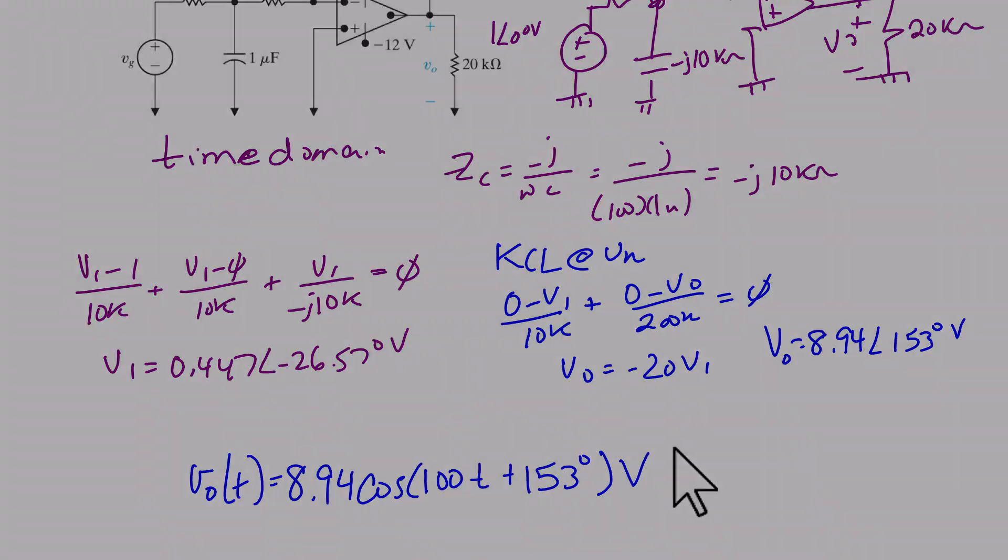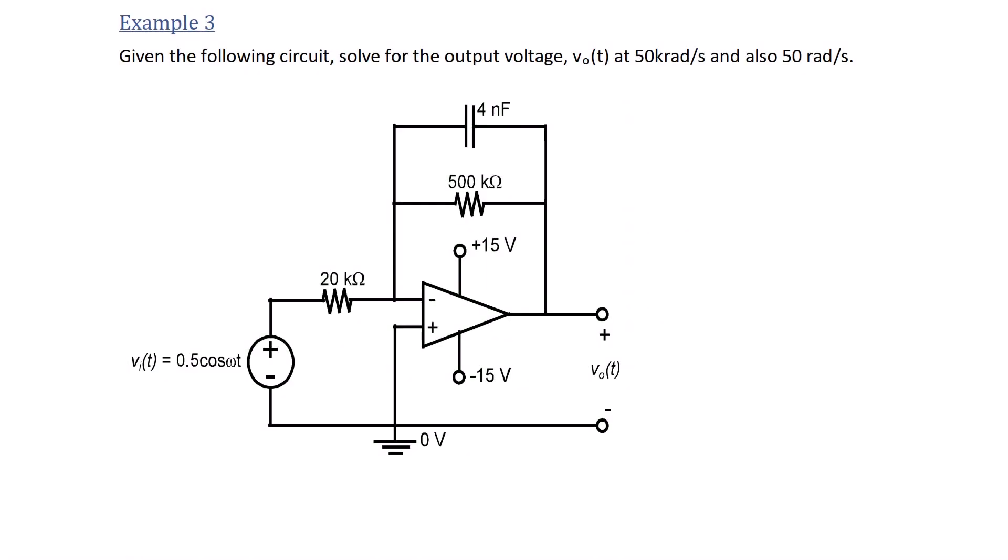Example 3: Given the following circuit, find the output voltage V0 of t at 50 kiloradians and also 50 radians per second. What we're going to see here, and the reason we do this at two frequencies is that this is actually a filter. And so what you're going to see is that when you evaluate it at two different frequencies, your output changes, and we will determine if it's a high-pass or low-pass filter.